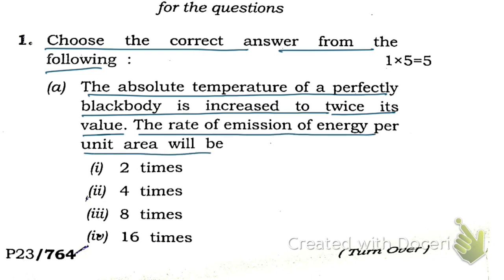2 times, 4 times, 8 times, or 16 times. Which one is correct? First we're going to use Stefan-Boltzmann's law, which is given by: emission E is equal to σ (Stefan-Boltzmann constant) times T to the power 4. If the temperature is doubled, the rate of emission will be E' = σ(T')^4.